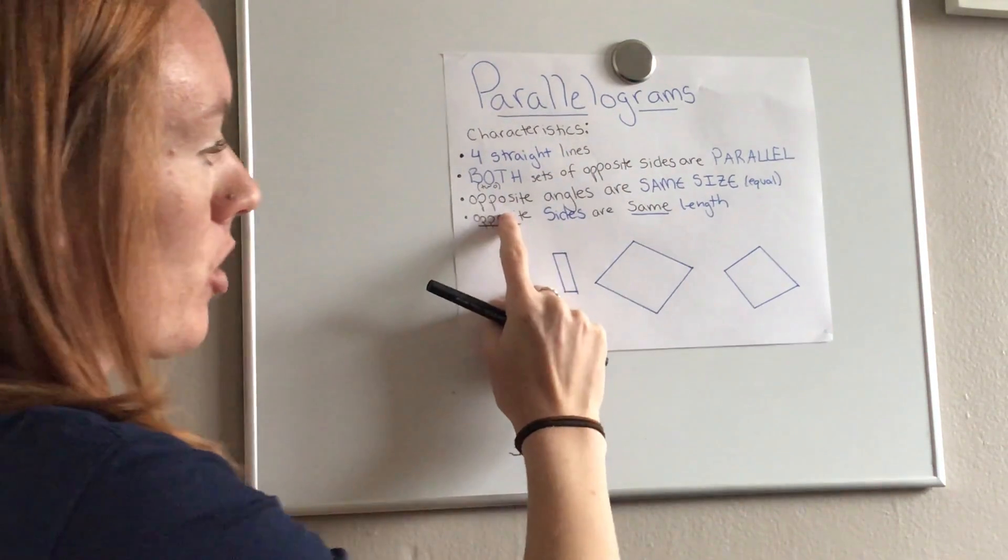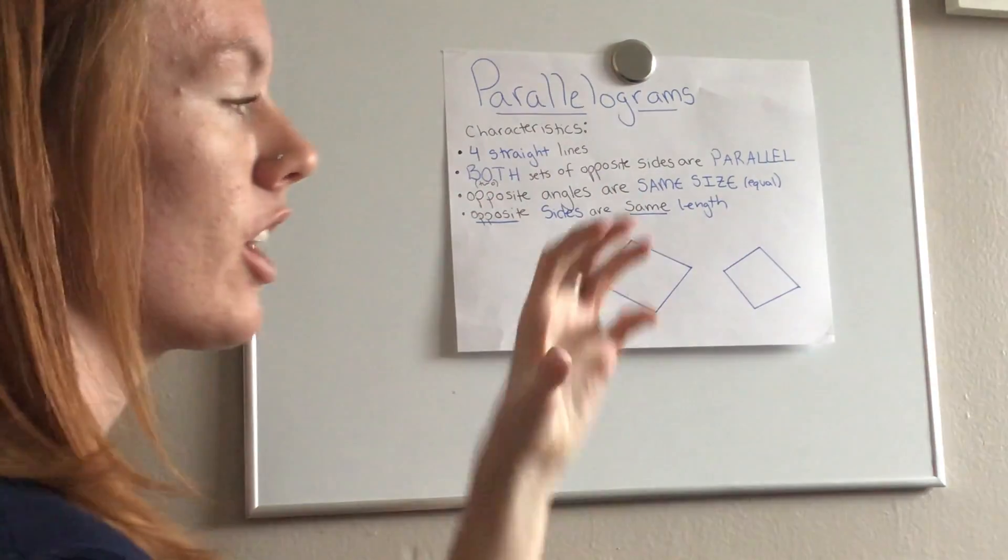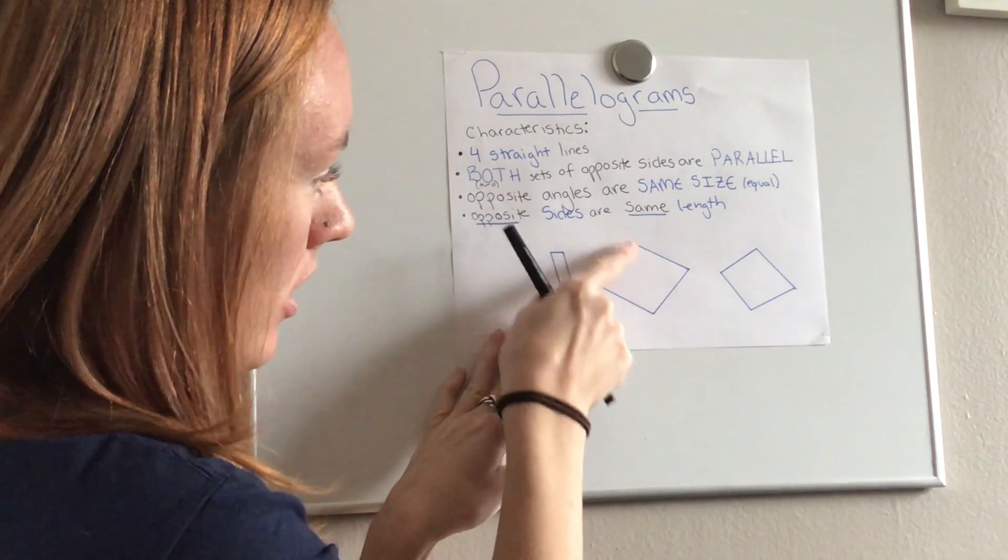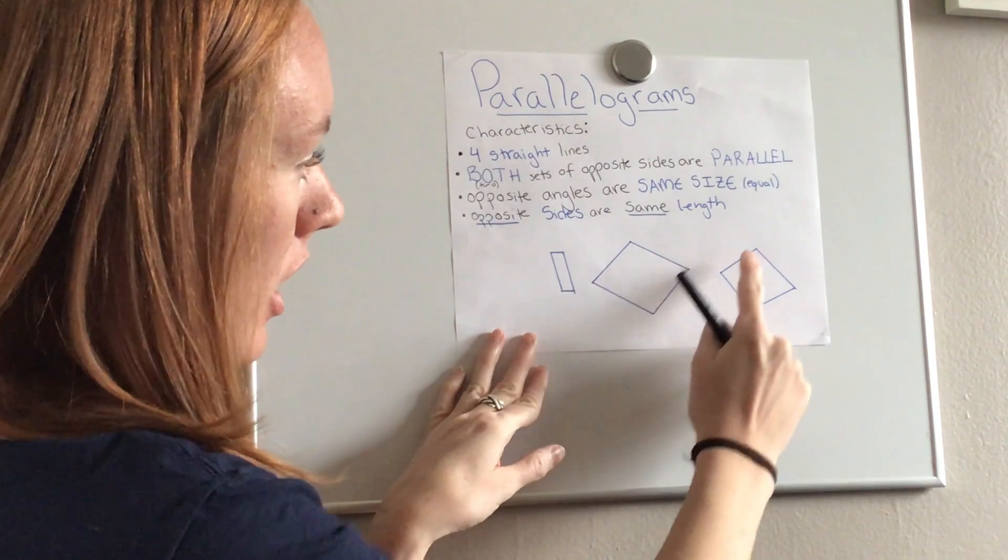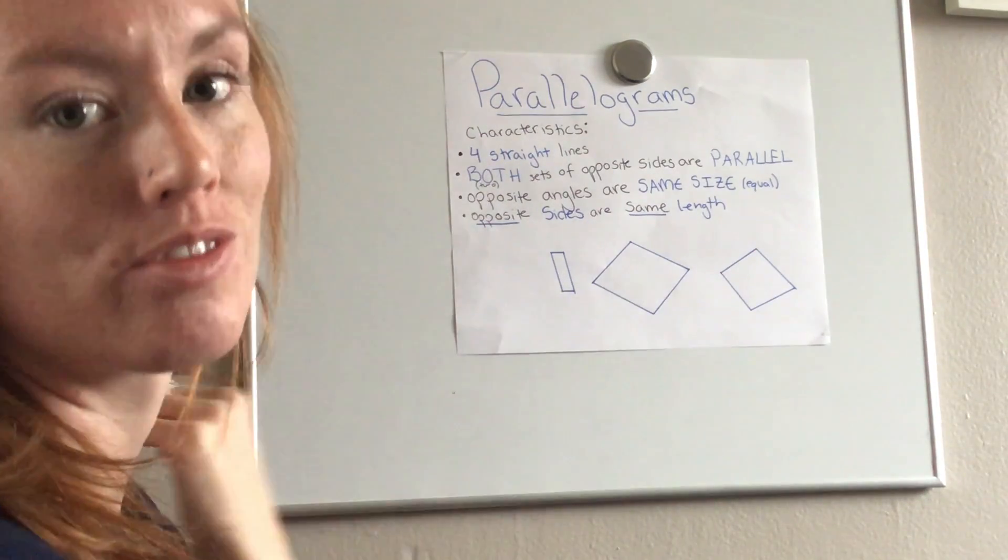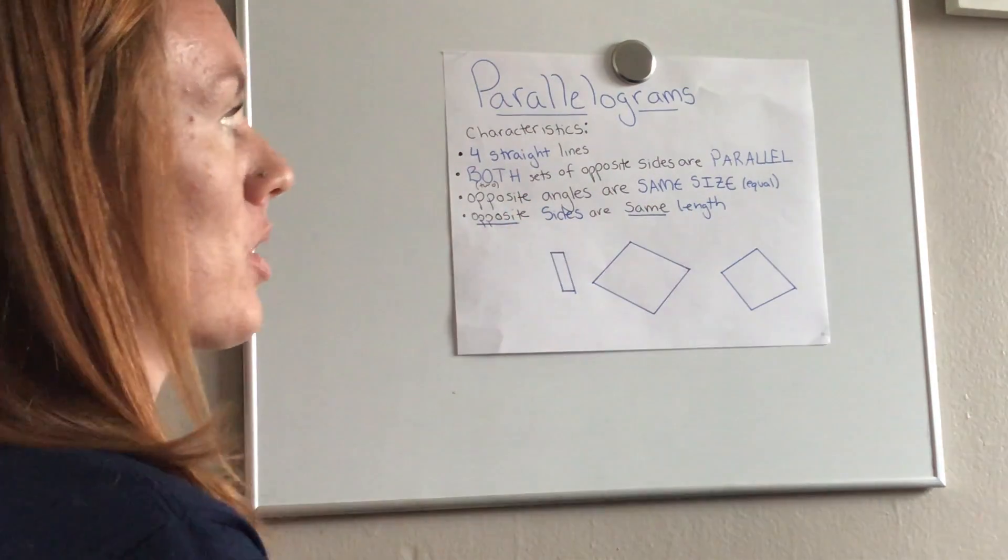It also has opposite angles that are the same size. So angles that are on the opposite side of each other have to be the same size, and opposite sides are the same length.